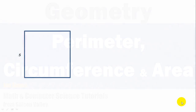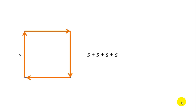Let's start by taking a look at a square with side S. If we wanted to walk around this square, we would walk length S along each of the four sides — S plus S plus S plus S, or 4S. So we can call that the perimeter, or the distance around the square, 4S — four times the length of one side, since all sides are the same length.